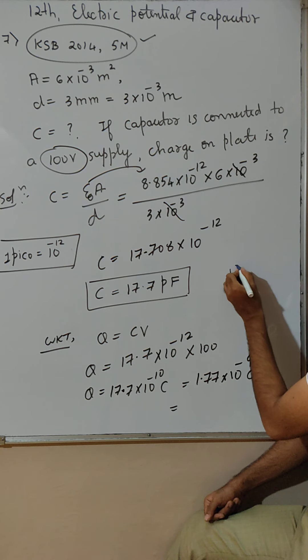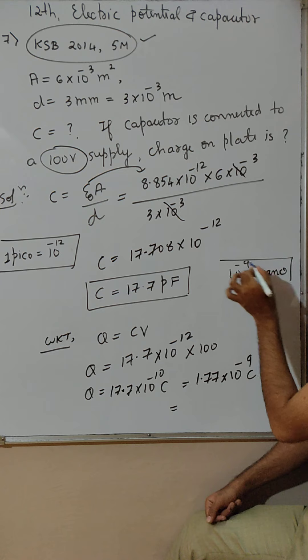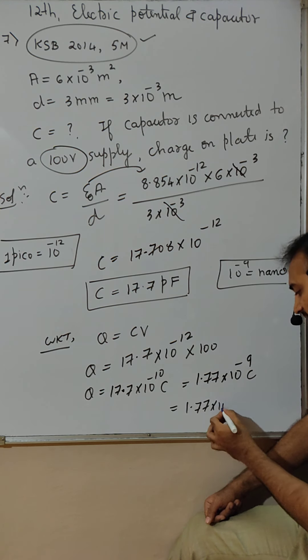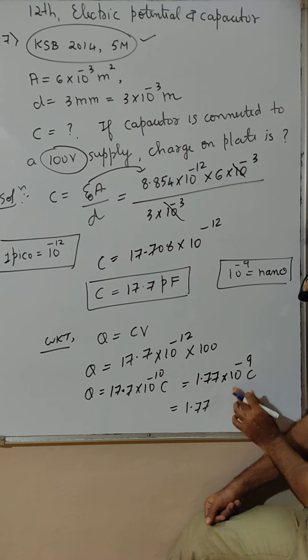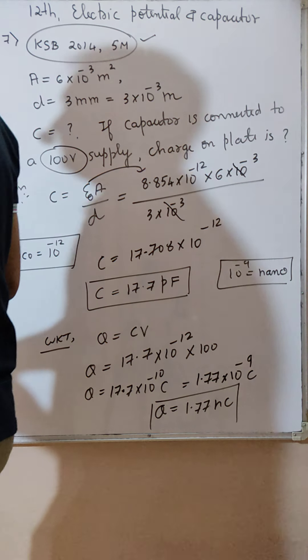And 10 raised to minus 9 is nano. So what you get here, 1.77 into 10 raised to minus 9, or just write nano coulomb. So charge is 1.77 nano coulomb.